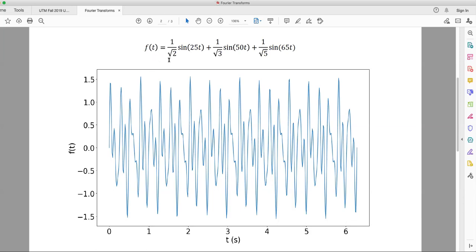This is a sum of sines of different frequencies. The first one has a frequency of 25 hertz, the second one 50 hertz, and the third one 65 hertz, and they each have different coefficients attached to them.